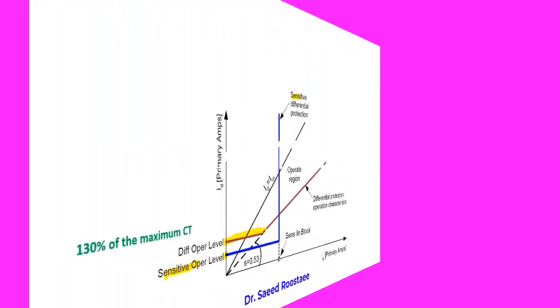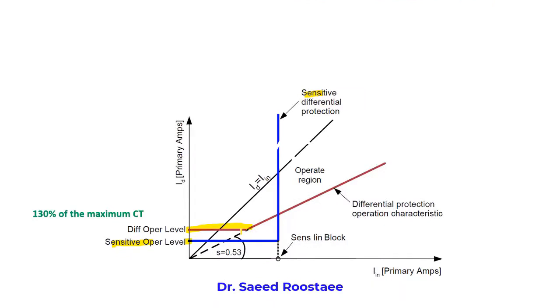The differential operating current should be set from 50% to 150% of the biggest CT, but we usually set to 130% of the maximum CT.